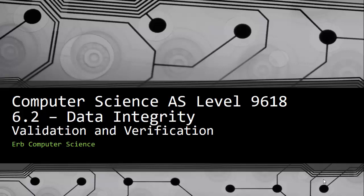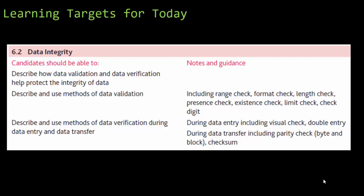In this video we take a look at computer science AS level 9618, topic 6.2: data integrity, validation and verification. Candidates should be able to describe how data validation and data verification help protect the integrity of data, and we'll be distinguishing between the two types.